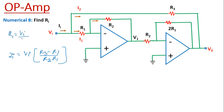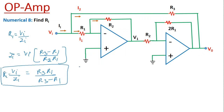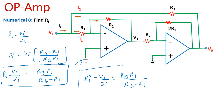Now Ri equals Vi divided by Ii. Cross-multiplying, we get Ri equals Vi over Ii equals R3 times R1 divided by R3 minus R1. So the input resistance for this circuit diagram is Ri equal to R3 R1 divided by R3 minus R1. If numerical values are given, we can substitute them to find the exact value of Ri.